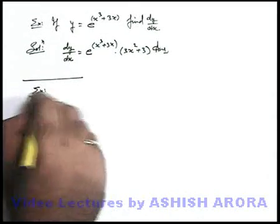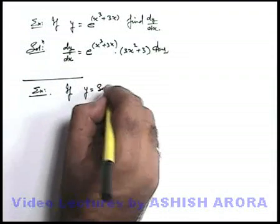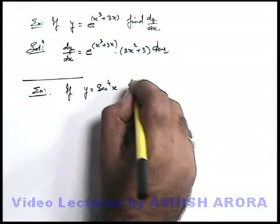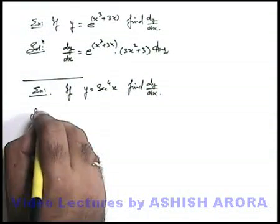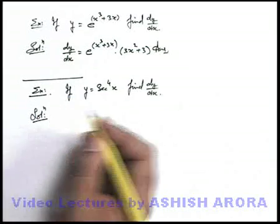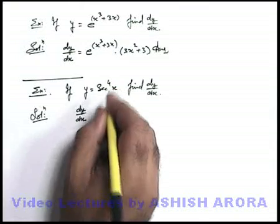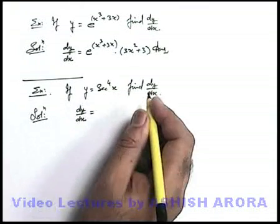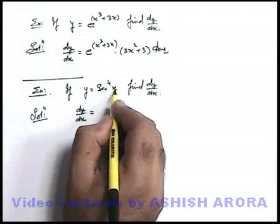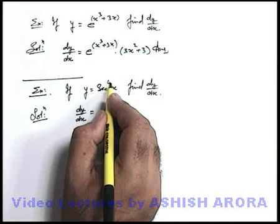If we are given y is equal to sec to the power four x, we are required to find dy/dx. We have studied that if y is equal to sec x, then dy/dx by direct differentiation is sec x tan x. But here it is sec x to the power four. We also know that if it is x to the power four, its differentiation is four x cubed.